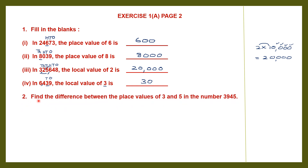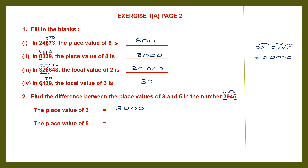Now question 2: find the difference between the place values of 3 and 5 in the number 3,945. We have 3 and 5 in this number. First find the place value of 3, then the place value of 5, and then find the difference — that means subtract the two values. The place value of 3: 3 is here — 1s, 10s, 100s, 1000s — so the place value of 3 is 3,000. Then the place value of 5: 5 is here, in the 1s place, so the place value of 5 is 5 into 1, which is 5.